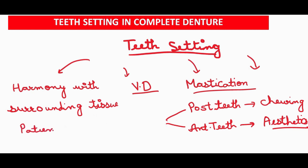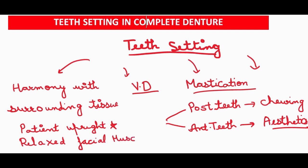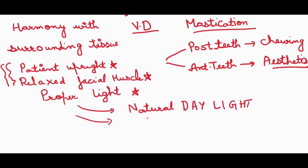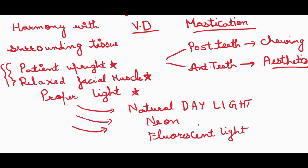The general considerations during teeth selection: first is patient positioning — the dentist ensures the patient is comfortably seated upright with relaxed facial muscles, which is important for evaluating how the teeth will fit naturally. Second is operator positioning. Third is lighting — natural daylight, neon, or fluorescent light is preferred, as it is essential for accurately assessing the tooth shade, form, and overall appearance.